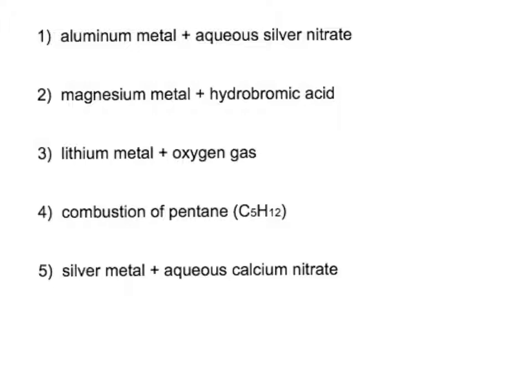So if you look at the first one here, it's aluminum metal, which is an element, and it's reacting with an aqueous solution, which is silver nitrate, which is a compound. So when you have an element in a compound, that should be a clue that we're dealing with a single replacement or displacement reaction in which the element is going to take the place of one of the other elements in the compound.